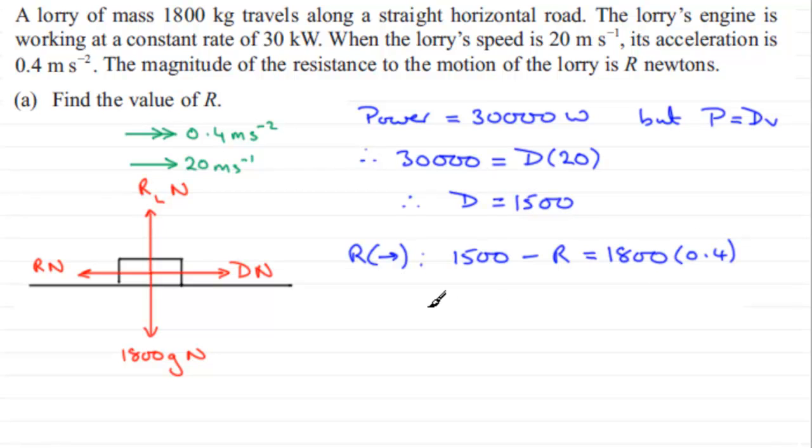So we just need to rearrange this equation to get R. If we add R to both sides and subtract this value here, we end up with R equaling 1,500 minus 1,800 multiplied by 0.4. And if you work that out, what you should find you get is 780.